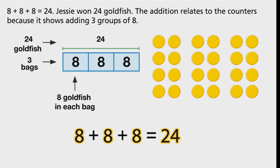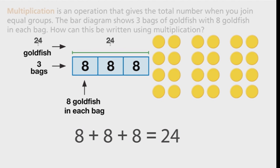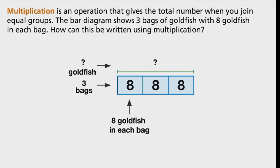Multiplication is an operation that gives the total number when you join equal groups. The bar diagram shows three bags of goldfish with eight goldfish in each bag. How can this be written using multiplication?